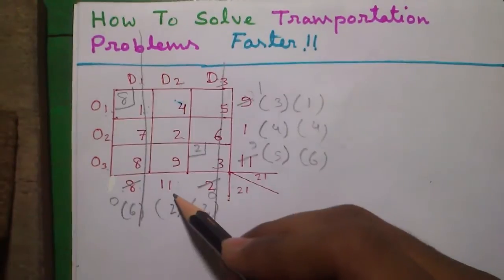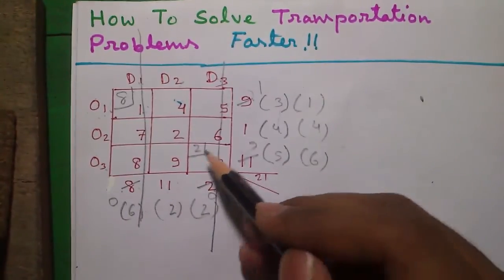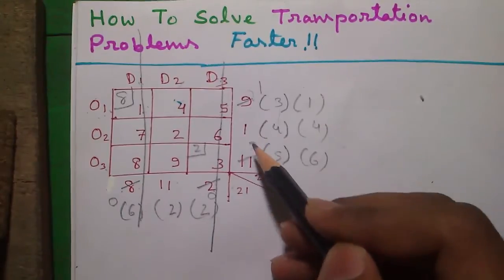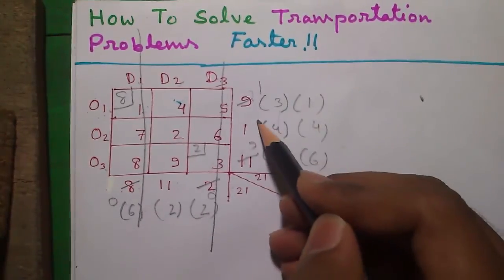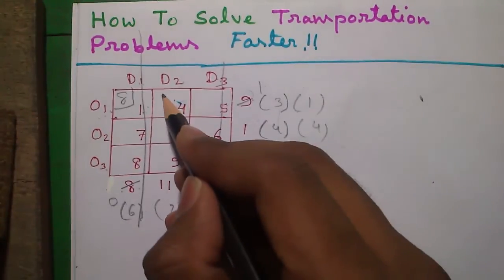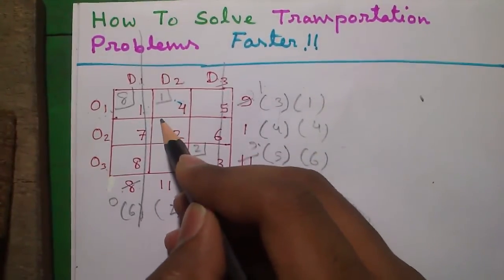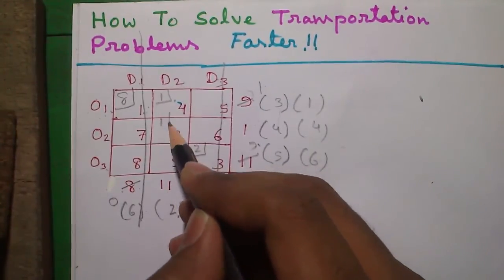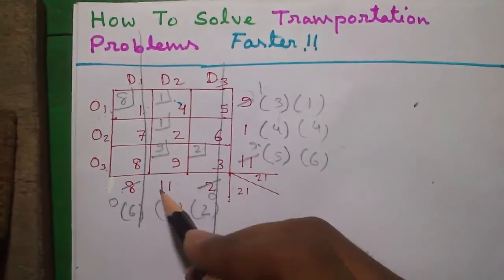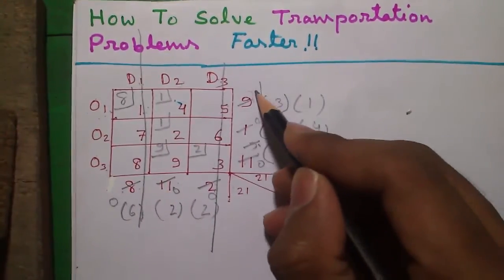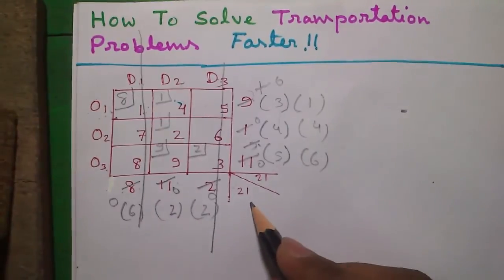So we are left with this column only with total demand 11 and total supply 1 plus 1 plus 9. So 1 plus 1 is 2, plus 9 is 11. So just allocate it, no check is required because total demand and total supply are equal now. 1, 1, and 9. So it becomes 0, it becomes 0, it becomes 0 and it becomes 0. So our allocation is done.